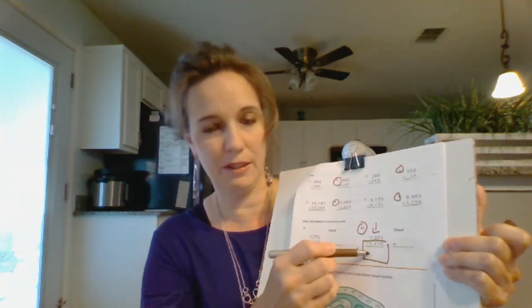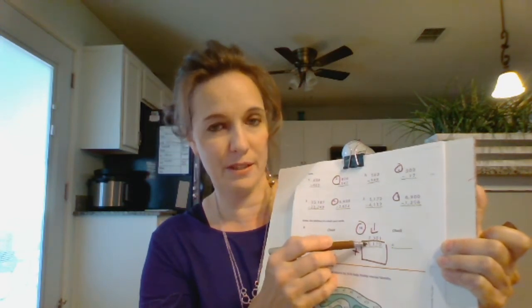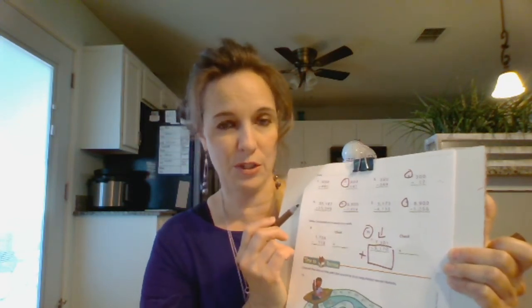Do you know how to check subtraction problems? What you do is you add the answer plus the bottom number, which is called the subtrahend. You have to add the subtrahend and your answer, and you should get the top number. This is called the minuend, subtrahend, and the answer is called the difference. So you add the difference and the subtrahend, and you should get the minuend, which is the number on top. You just do it backwards.